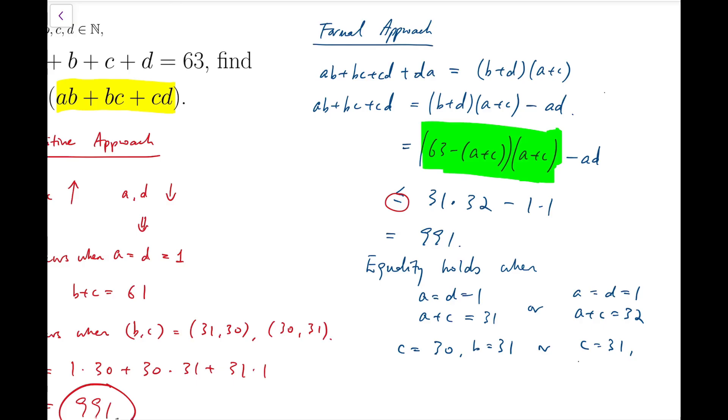C is either 30 and then B would be 31, or C is 31 and B is 30. So we have managed to find the equality cases in a formal way.